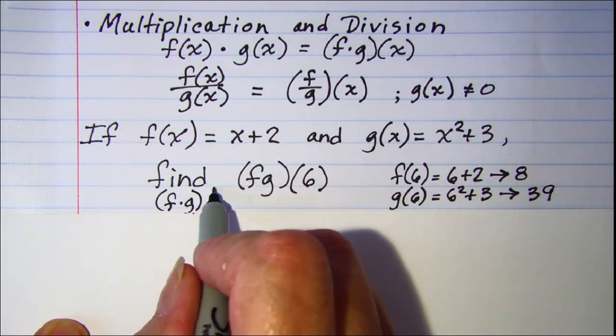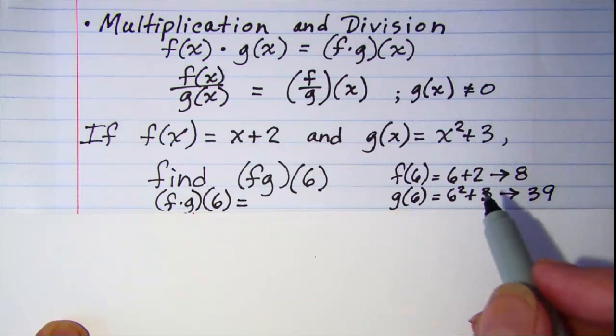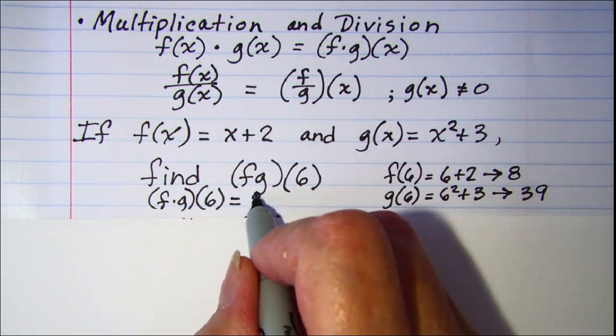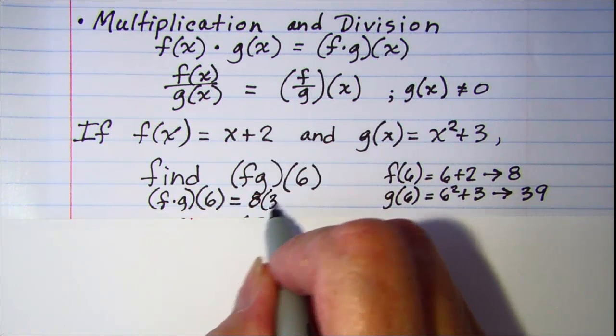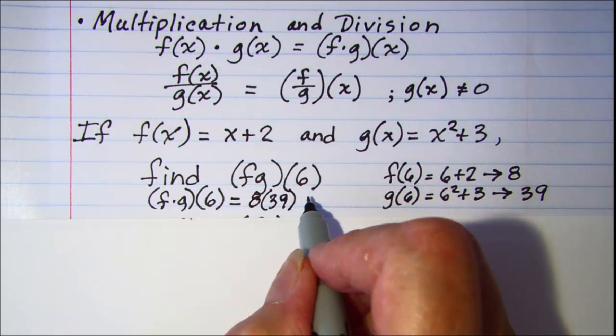And so then we have (f·g)(6) will equal 8 × 39 or 312.